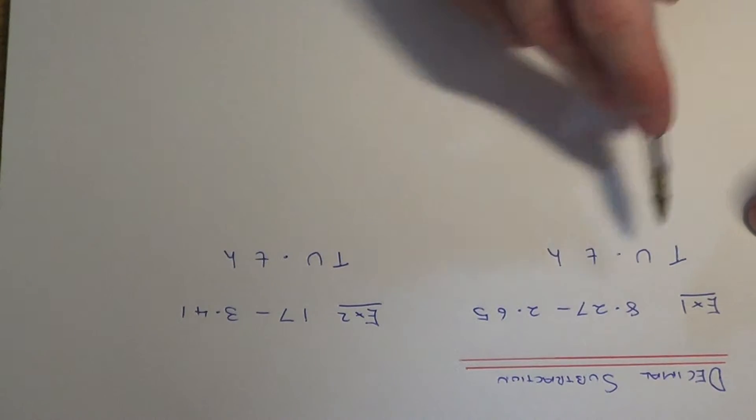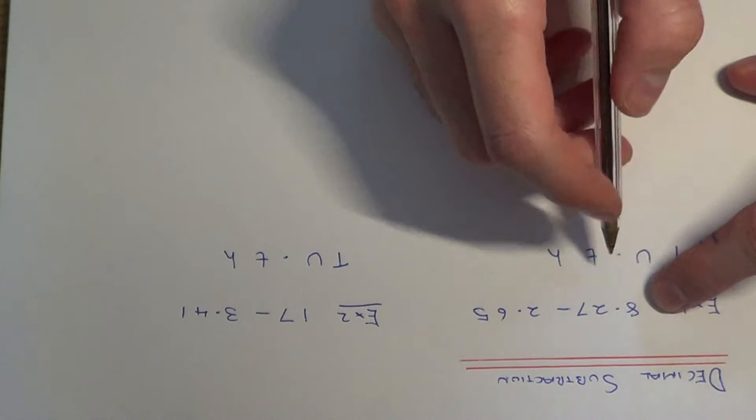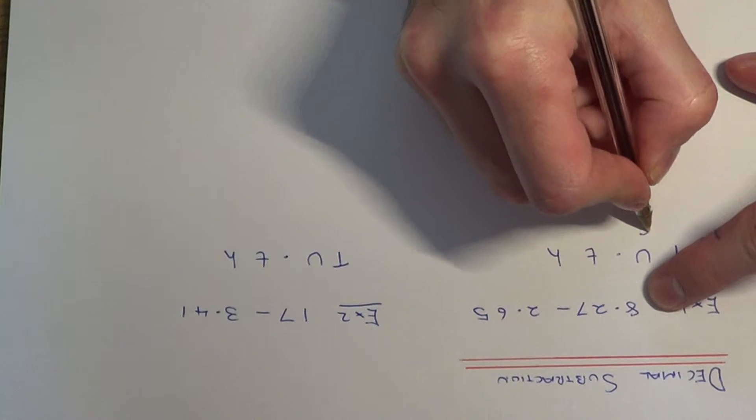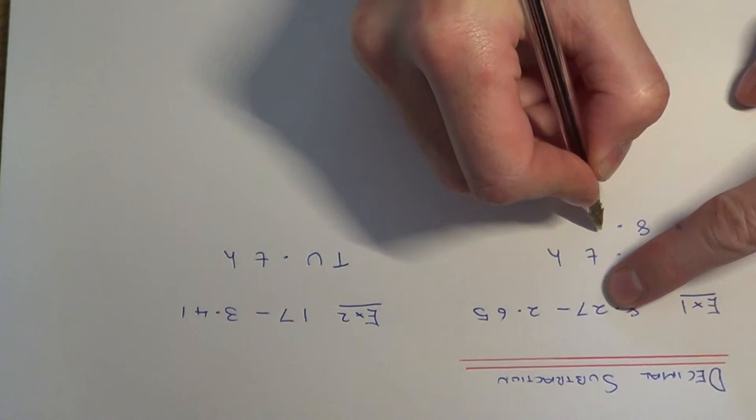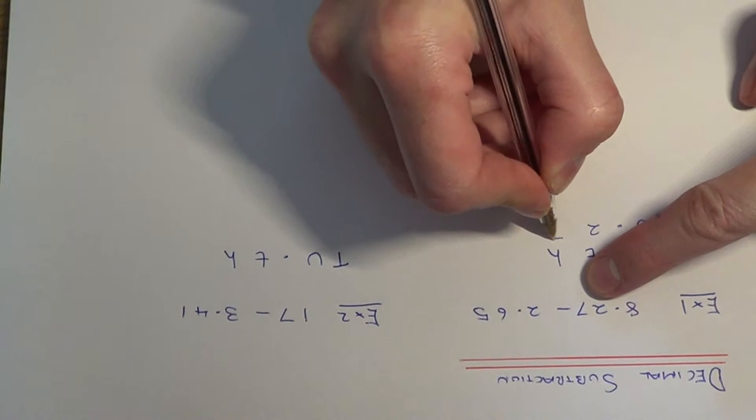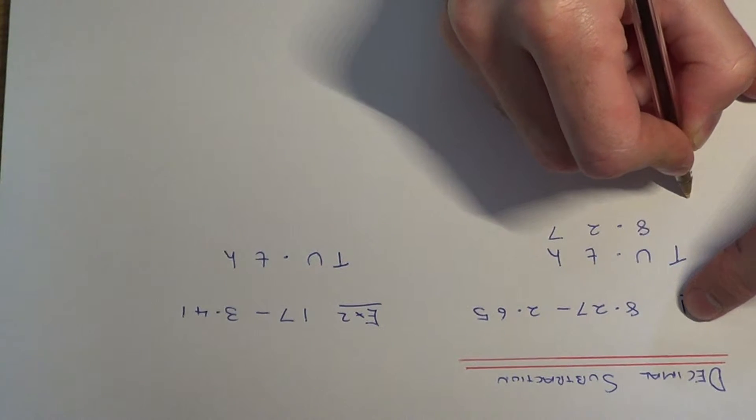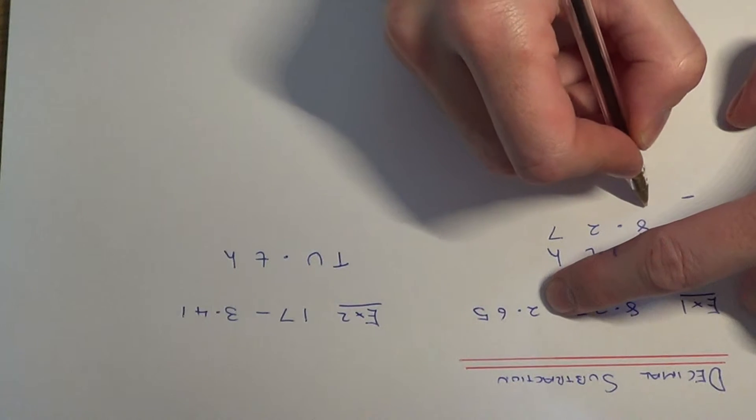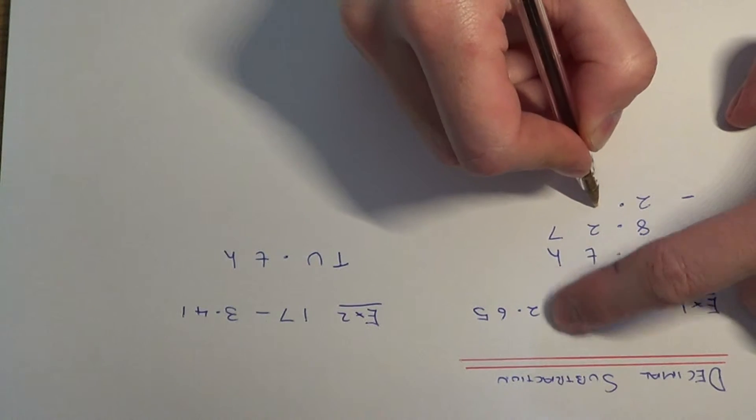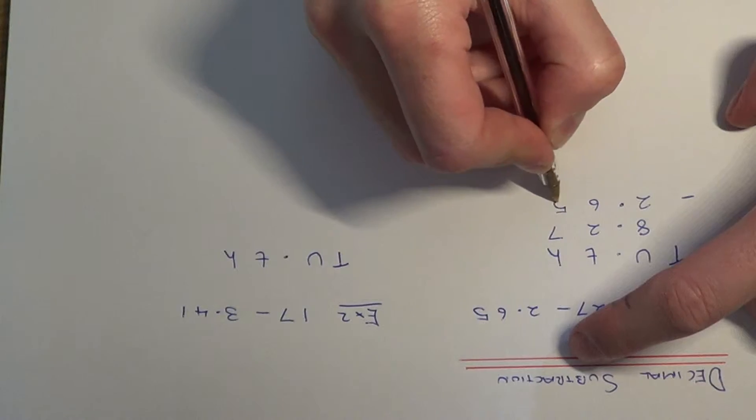So first of all, insert the numbers into the correct columns. So we have 8 units, we have 2 tenths and 7 hundredths, and we're subtracting 2.65, so that's 2 units, 6 tenths and 5 hundredths.